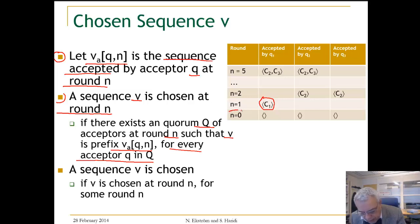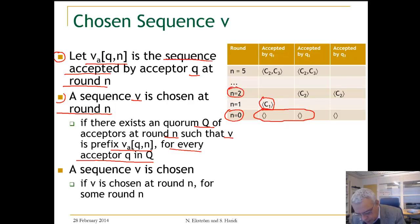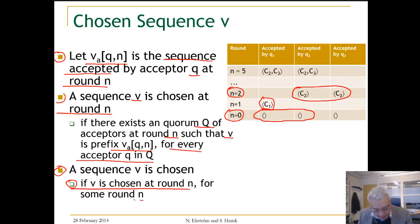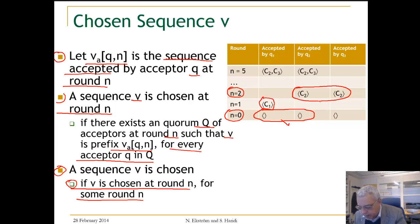If we look at round 0 and take a quorum, we see that the empty sequence is accepted at round 0. If we go to N equals 2, we see that there is a majority set — a quorum — that accepts the sequence consisting of C2. A sequence is chosen if V is chosen at round N for some round N. Looking at this table as a whole, we see that the empty sequence is chosen, and the sequence consisting only of C2 is also chosen.